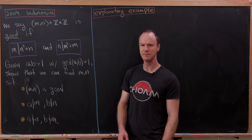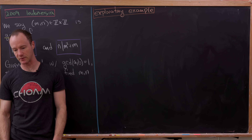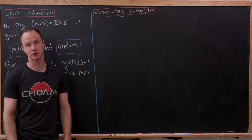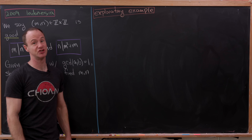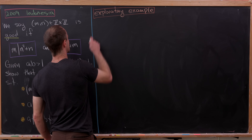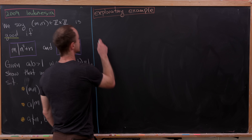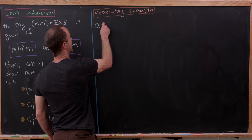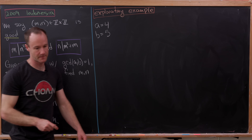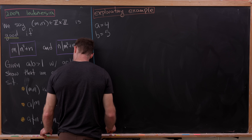Let's maybe see how we can do this with an exploratory example and then kind of back-engineer that into a general solution. We can take a and b as long as their GCD is 1, so maybe we'll take a equal to 4 and b equal to 5.